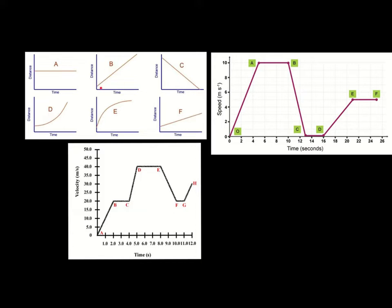On graph B, someone is increasing their velocity. As time ticks by, distance is increasing — someone is running away from us. So this person has velocity. On graph C, someone also has motion and velocity, but as time goes on, distance is decreasing. This would be someone running towards you — the distance from you is getting smaller and smaller.